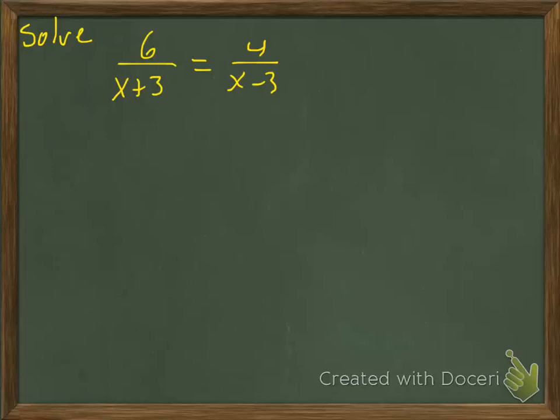Alright, we're going to look at three examples of solving rational equations. Just like with equations that had fractions in them, the first thing we want to do is eliminate the fractions, which means we multiply by the least common multiple.